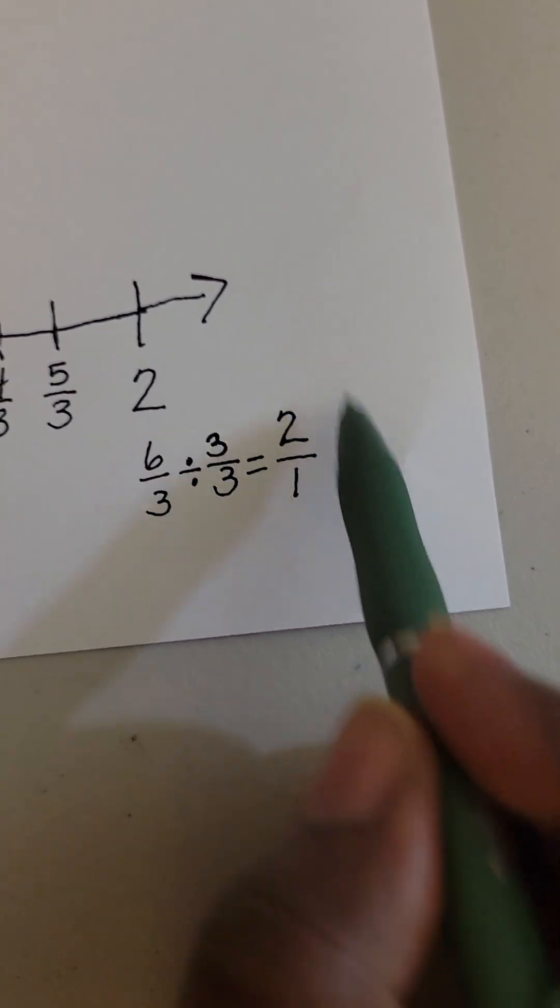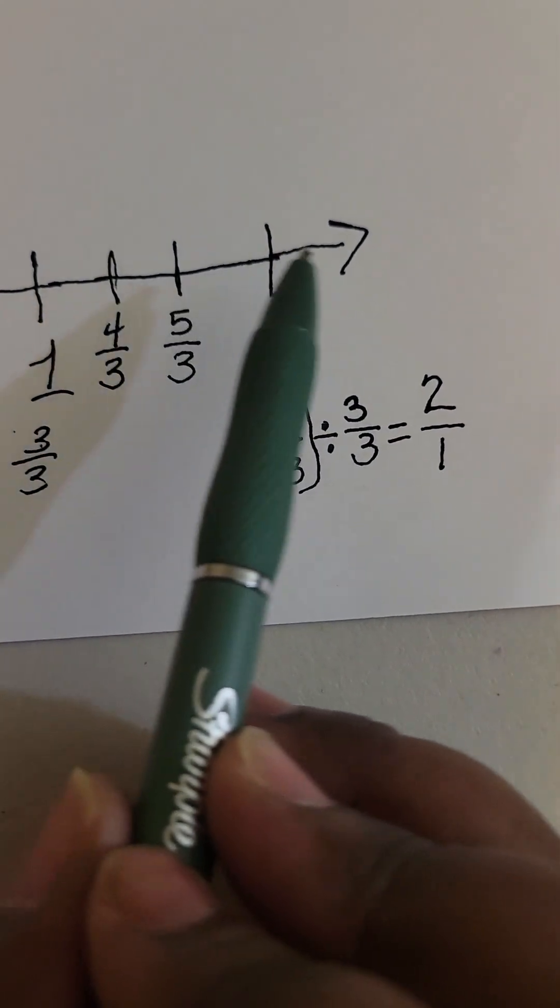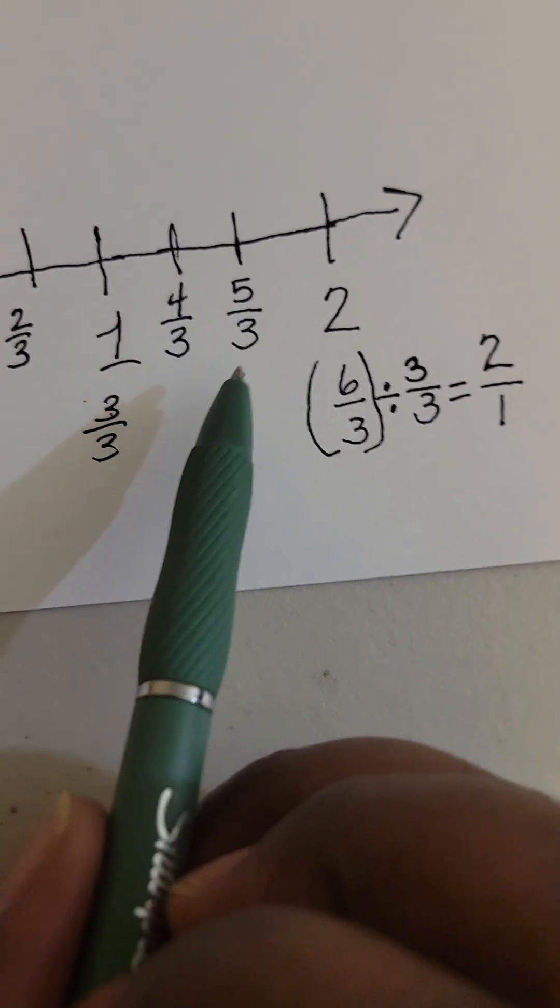So 2 over 1 is the same as 2. So I know that I am correct with my partitions and in labeling my fractions.